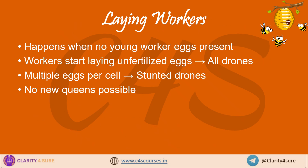Let's see what laying workers do. If there's no queen and no young eggs, the colony can't make a new queen. In that case, some worker bees start laying eggs, but since they can't mate, all their eggs turn into drones. This weakens the colony because drones can't work, and no new queen is possible from this situation.